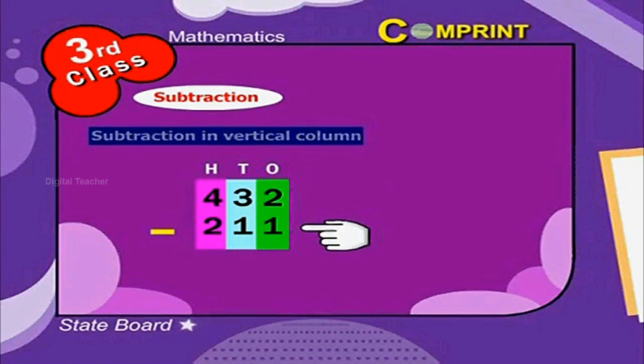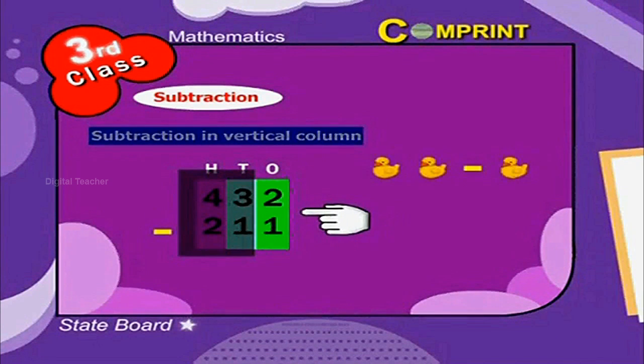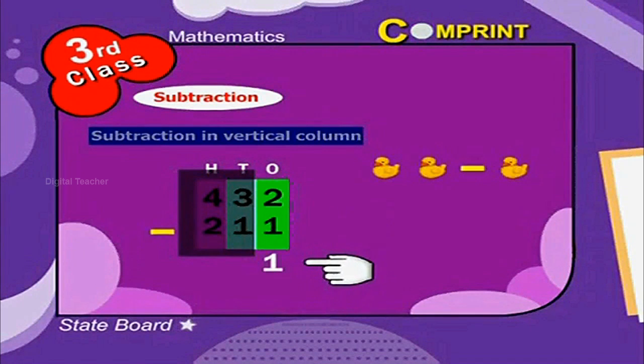432 minus 211. Step 2: Let us subtract the digits in 1's place. That is, 2 minus 1 is equal to 1.